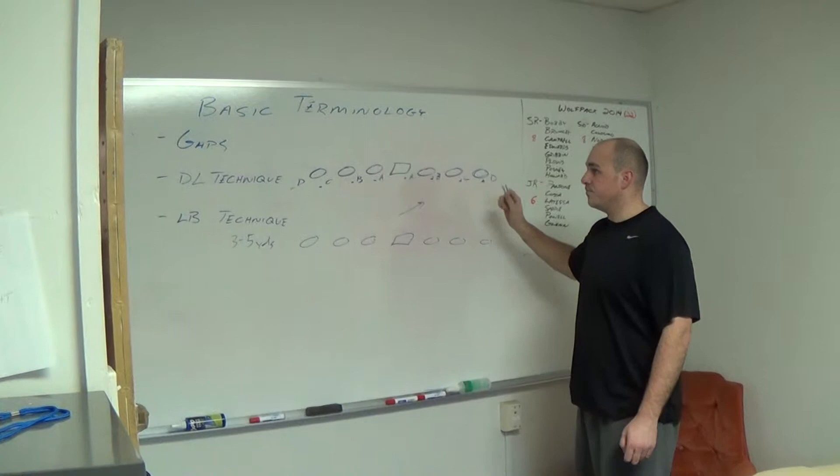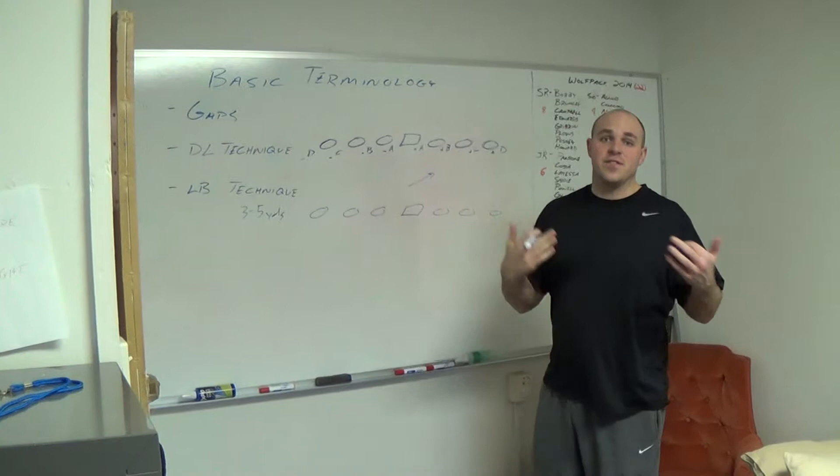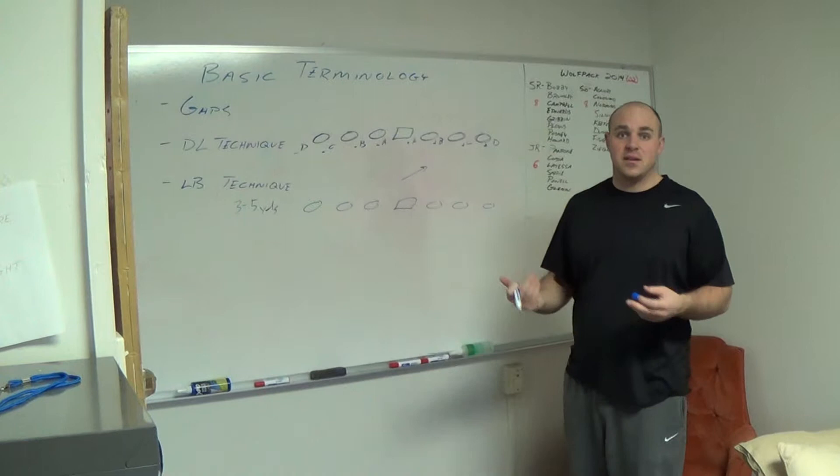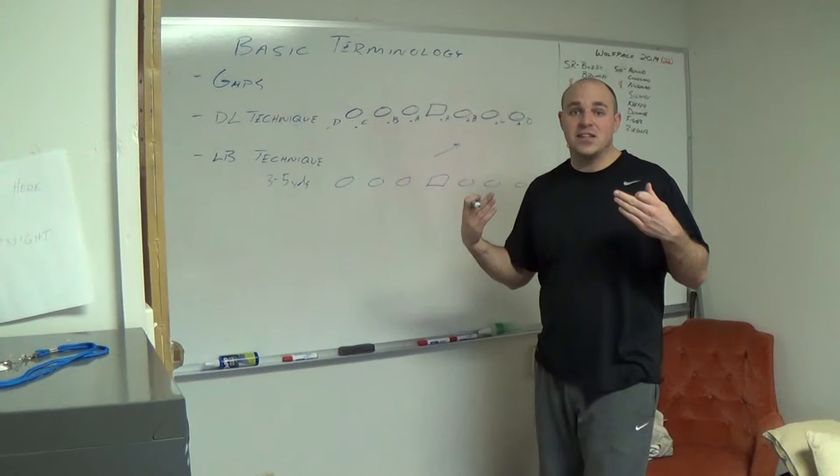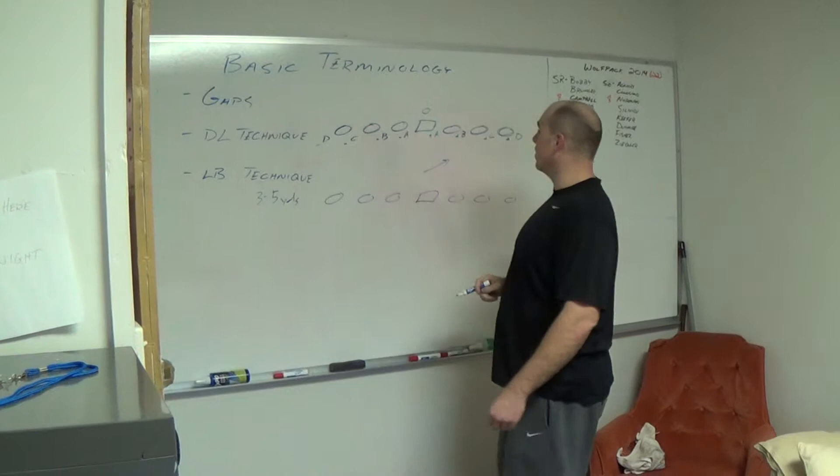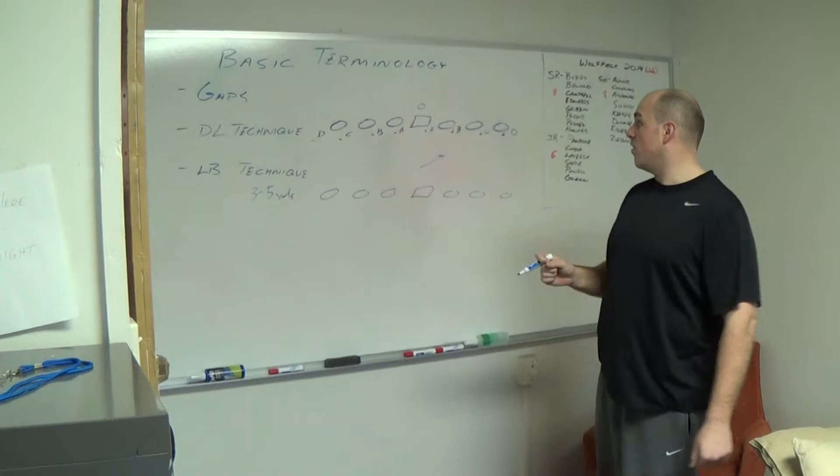The next thing we're going to talk about today is D line technique. Defenders who line up on the ball, how do we classify their alignments? These could be anyone from a down defensive lineman, a walk up backer, or even a walk up defensive back. This is all communicated by single digits. If a defender is lined up head up over the center, nose to nose, we call that a zero technique.